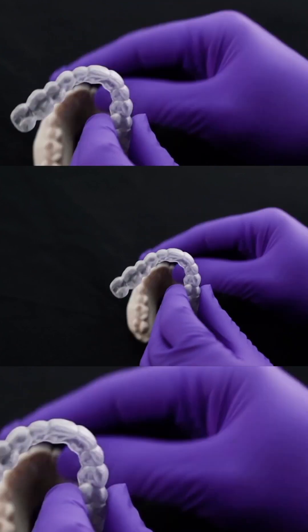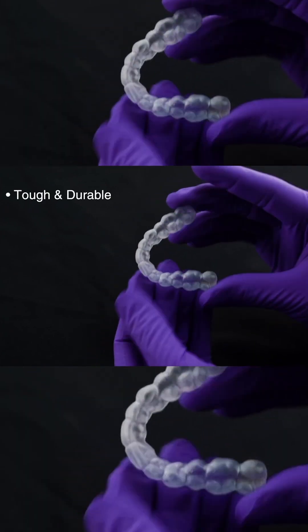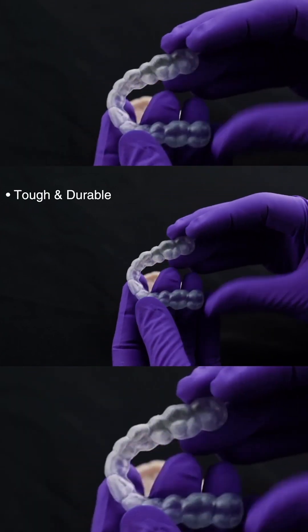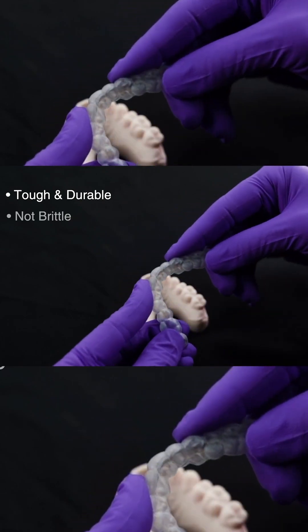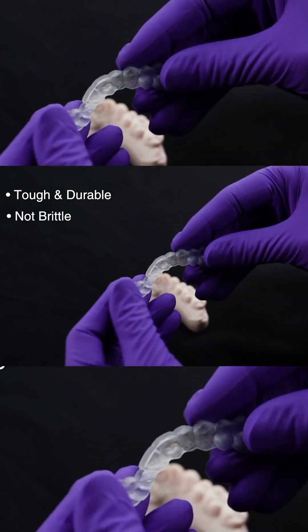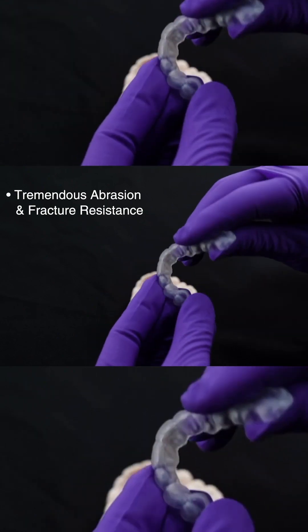Like a hard splint, KeySplintSoft is tough and durable and able to withstand the forces of bruxism. Unlike a hard splint, KeySplintSoft is not brittle and remains flexible for patient comfort with tremendous abrasion and fracture resistance.